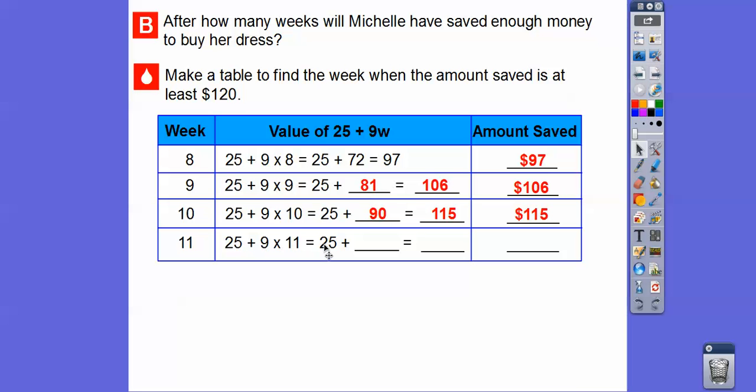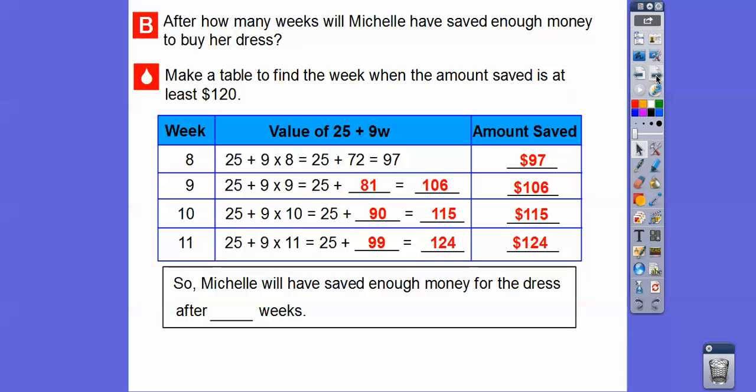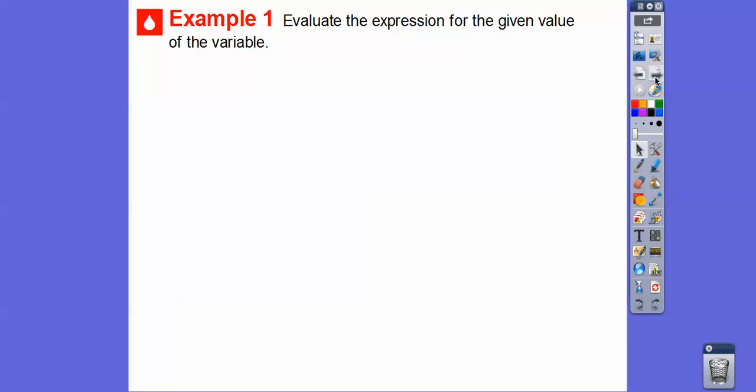So it looks like it's going to be 11 weeks. Let's see. So 9 times 11, we have to do that first. 9 times 11 is 99. And 25 plus 99, well this is just one under 100 and 100 plus 25 is 125, so one less than that would be 124 right there. So Michelle will have saved enough money for the dress after 11 weeks. In fact, she'll have $4 to spare. Go buy a nice ice cream or something.